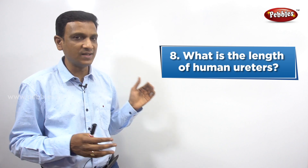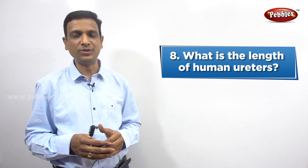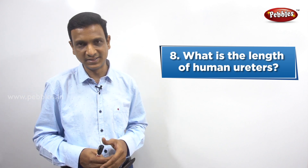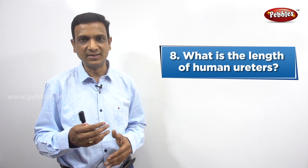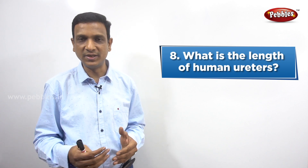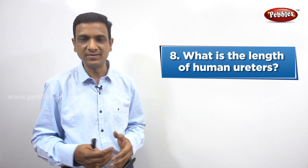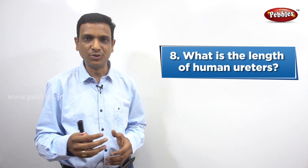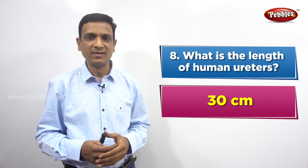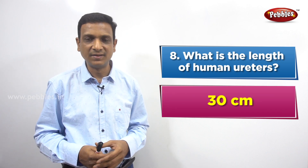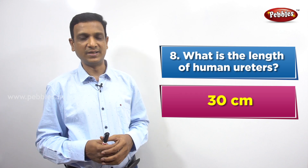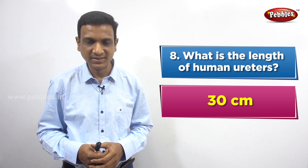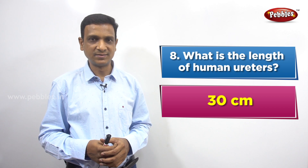So the question is: what is the length of the human ureter? Is it 10 centimeters, 20 centimeters, 30 centimeters, or 40 centimeters? The answer is 30 centimeters. The length of the human ureter is 30 centimeters.